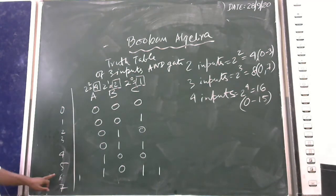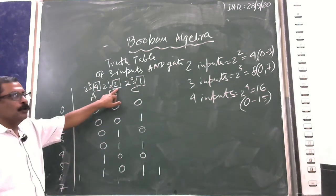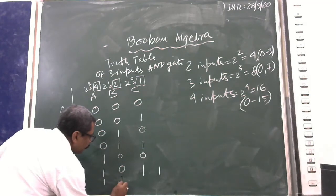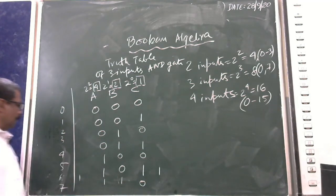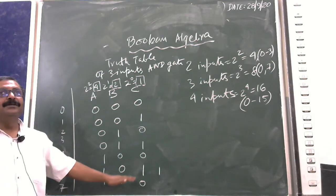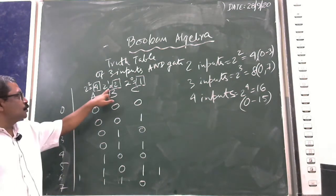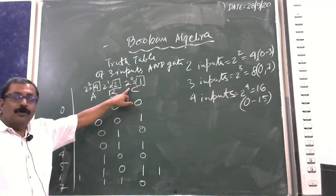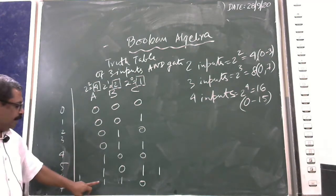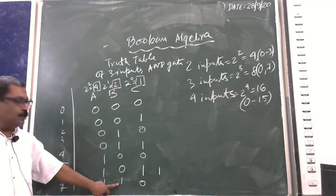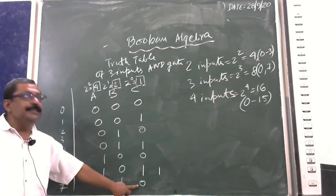For value 6: 4 + 2 = 6, meaning A and B are ON — giving 1, 1, 0. For value 7: 4 + 2 + 1 = 7, meaning all three inputs are ON — giving 1, 1, 1. That completes the 3-input truth table.